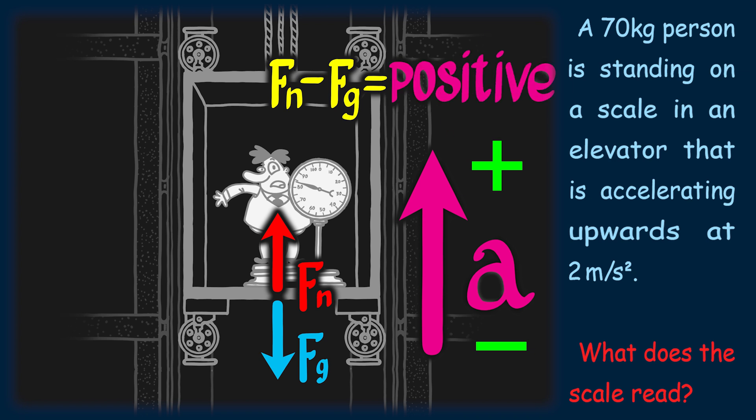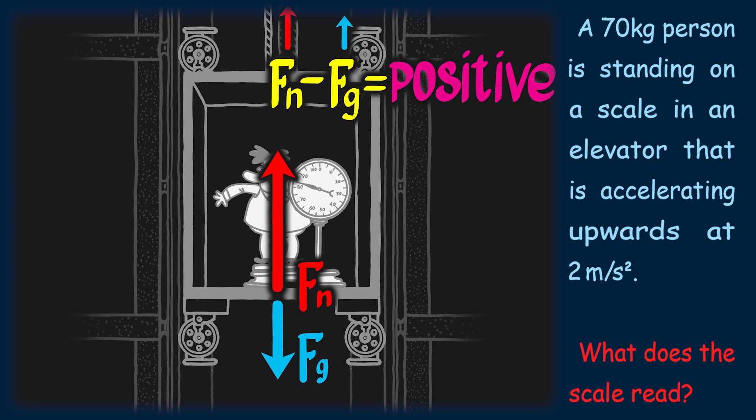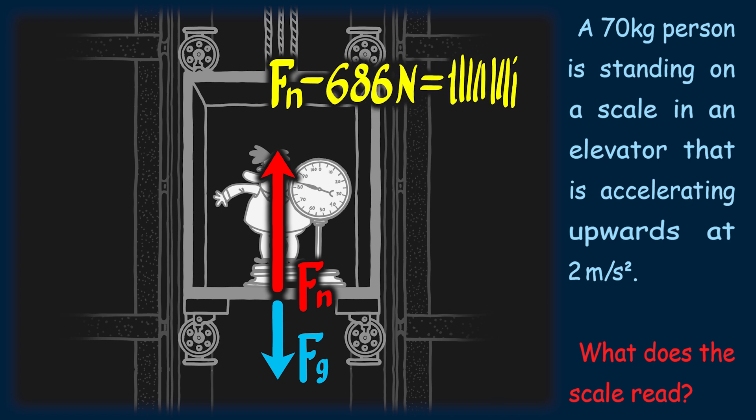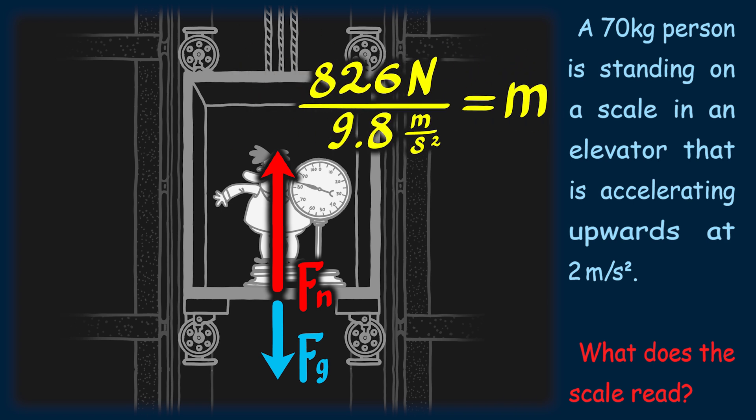If we look at our formula, we see that the sum of the forces now has to be positive, which since the force of gravity is always constant, this means that the normal force must now be bigger than the force of gravity. Plugging in our values and solving for the normal force, we get 826 newtons, which then dividing by 9.8 gives us an apparent weight of 84.3kg.